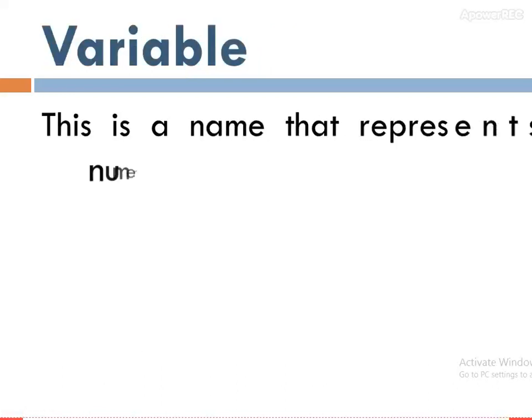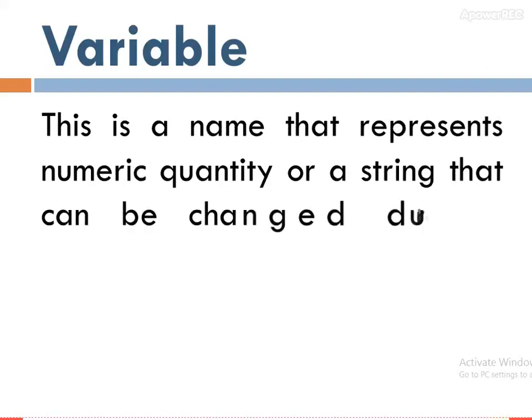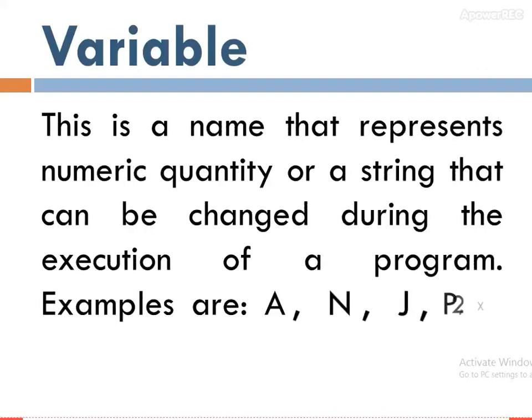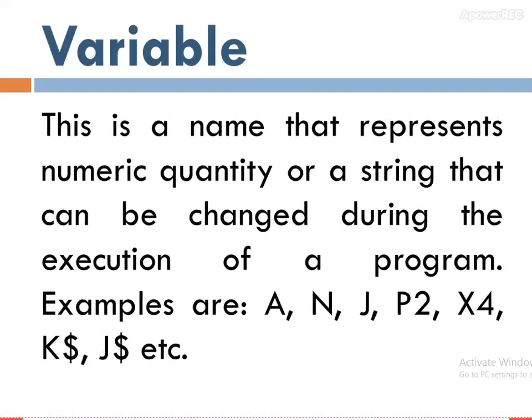Now let's talk about variables. A variable is a name that represents a numeric quantity or a string that can be changed during the execution of the program. Examples: A, N, J, P2, X4, K$, J$.